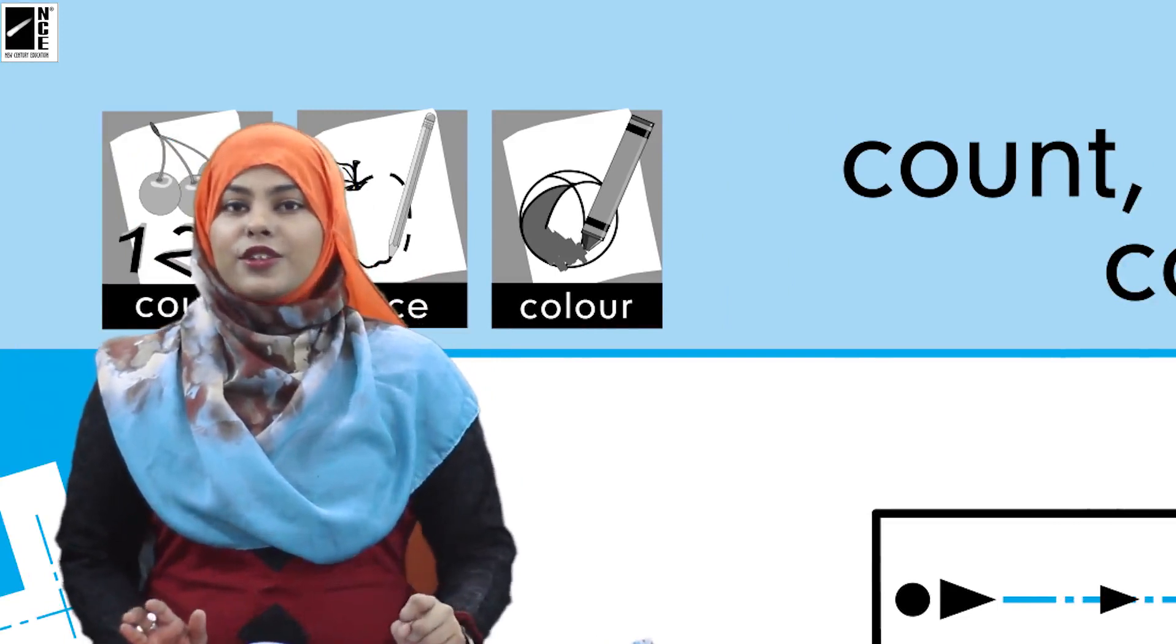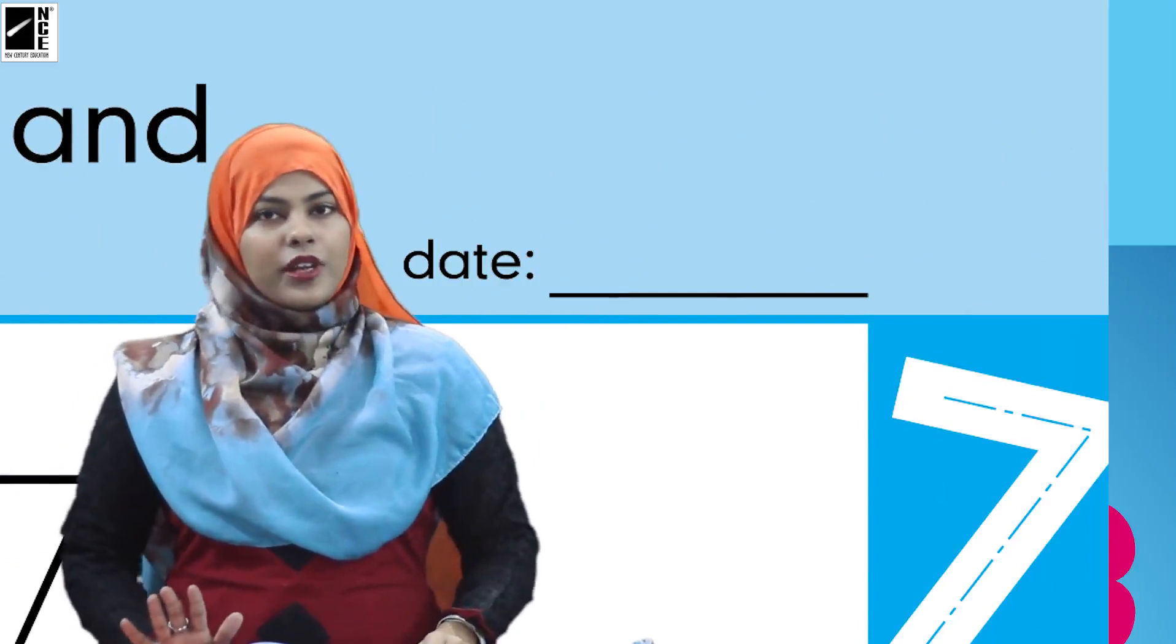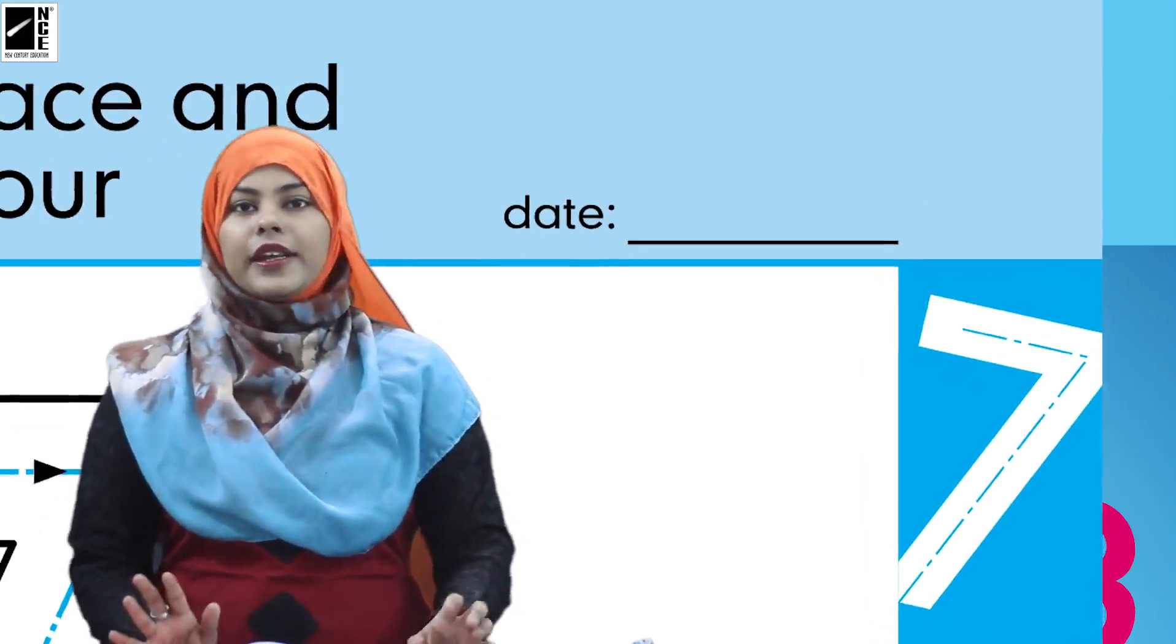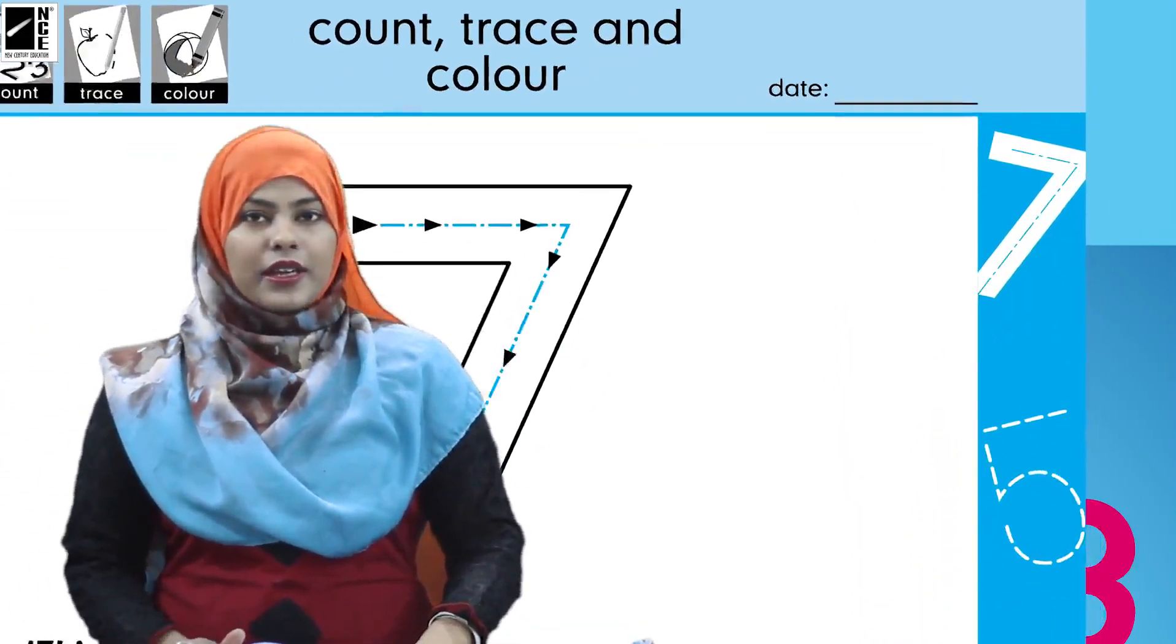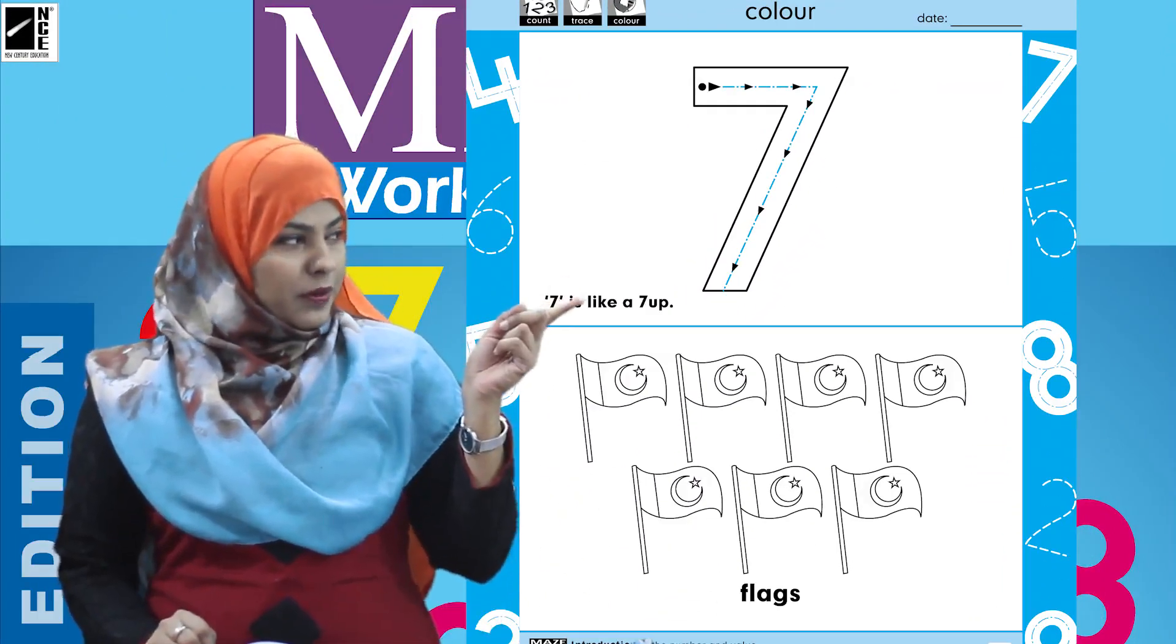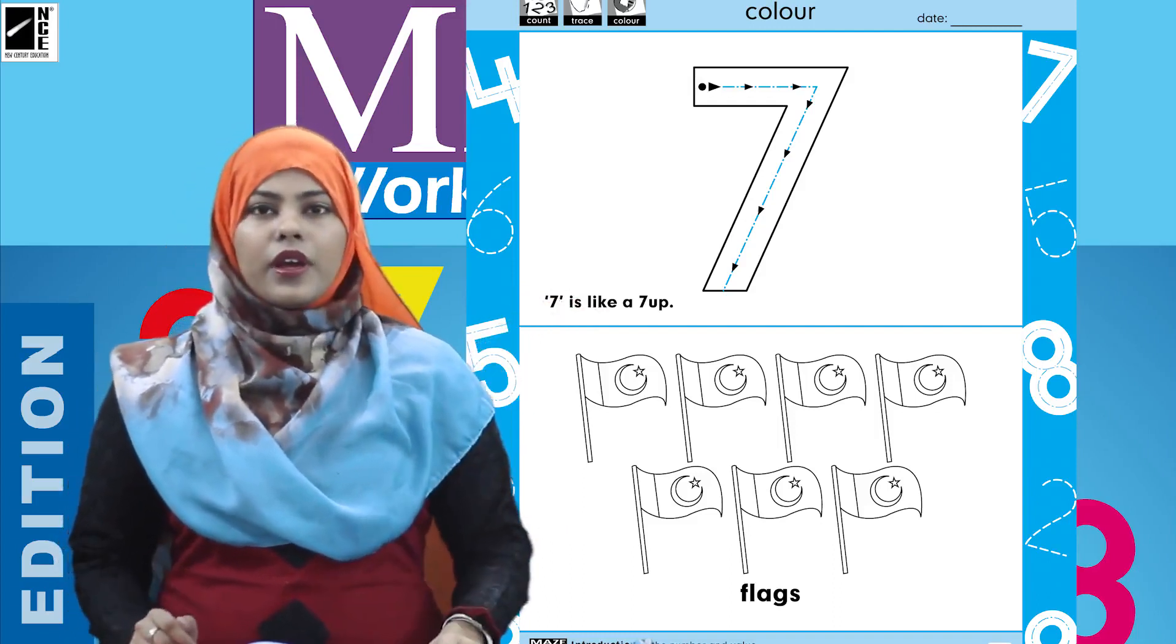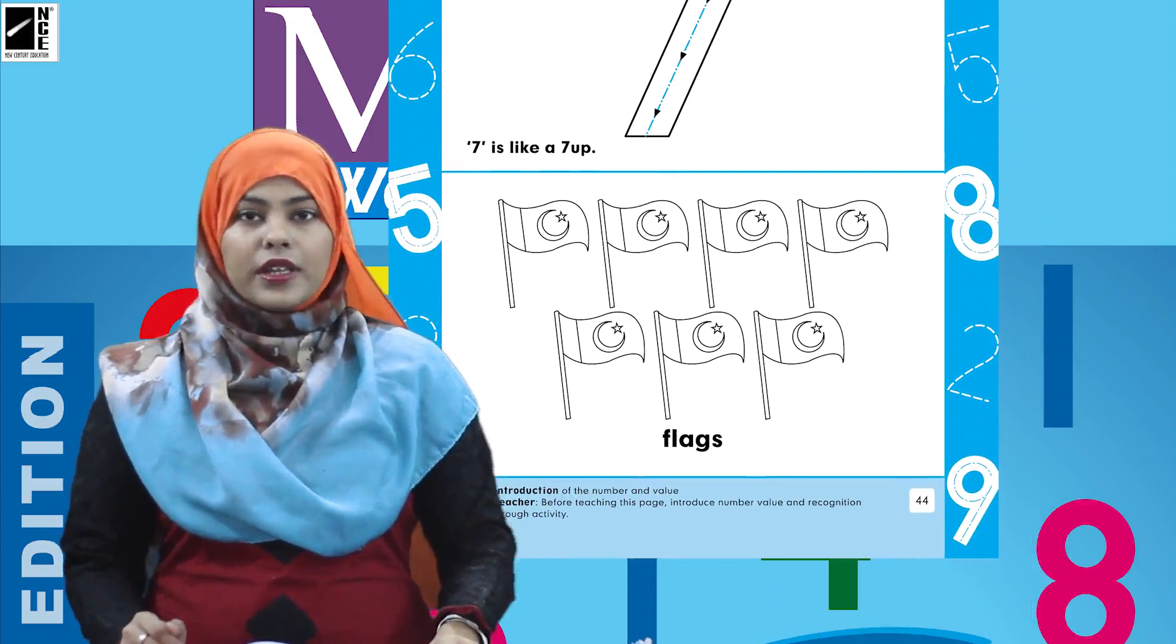So we have to do some counting, tracing and coloring on this page. And then write the date in the date section. Okay now kids, hamne icons bhi read kar liye, date bhi mention kar liye. Ab hum kya karenge, ab hum dekhen yahan space mein kya hai. Aur yahan par kuch number bhi hai aur kuch pictures bhi bane hui hain. To pehle in pictures ko dekh lete hain ke kya bana hua hai aur isko hum count bhi kar lete hain.